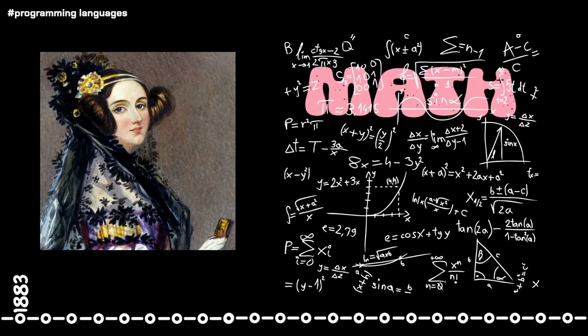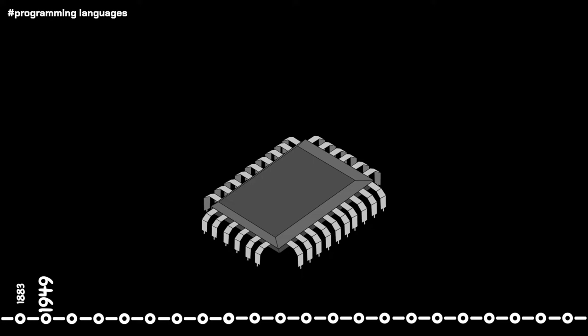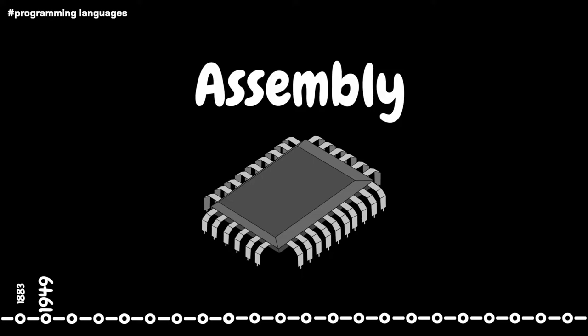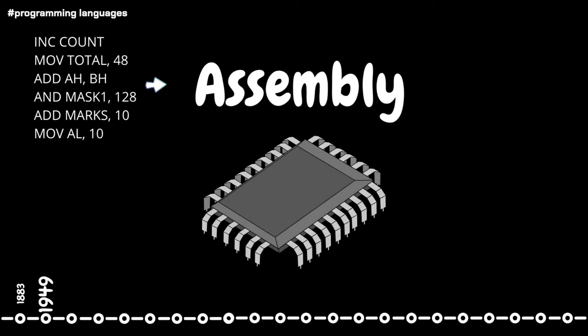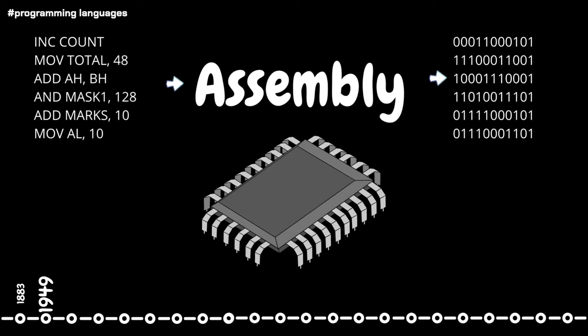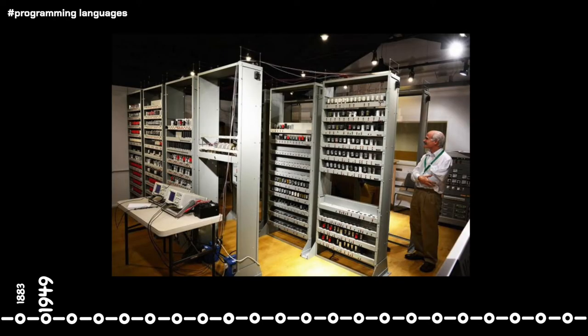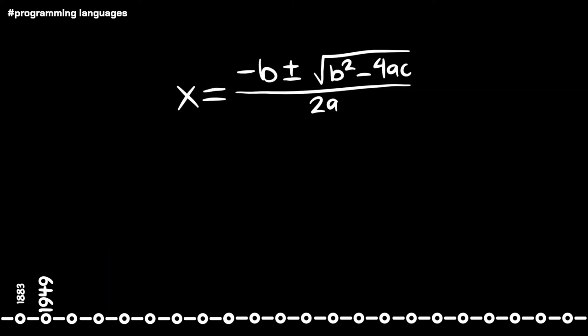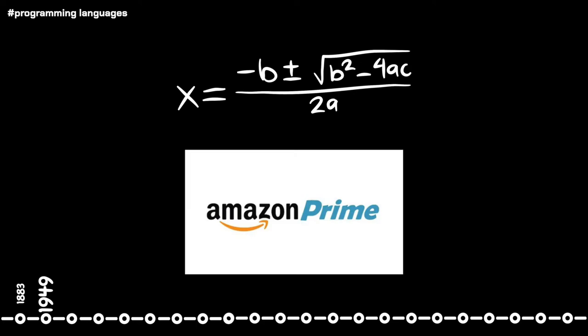This algorithm is broadly considered to be the first computer programming language. Fast forward 66 years to 1949, the low-level language known as assembly was created. Assembly has a stronger relationship between the instructions within the language and machine code instructions. It was first widely implemented in EDSAC, a delay storage automatic calculator, constructed by Maurice Wilkes at the University of Cambridge. The calculator was used to solve differential equations and discovered a 79-digit prime number, the largest known at the time.